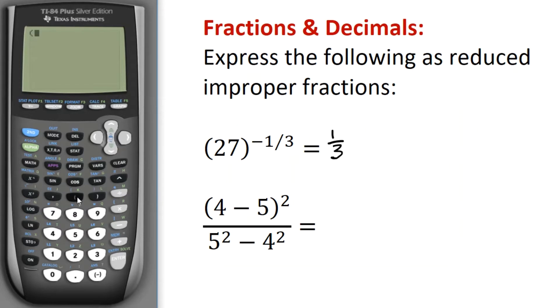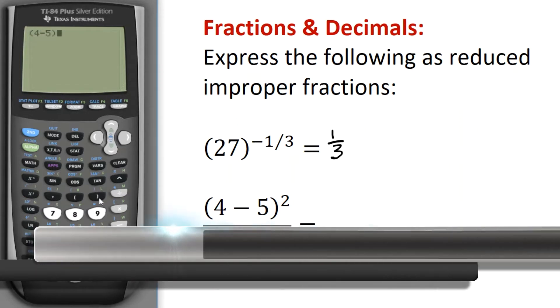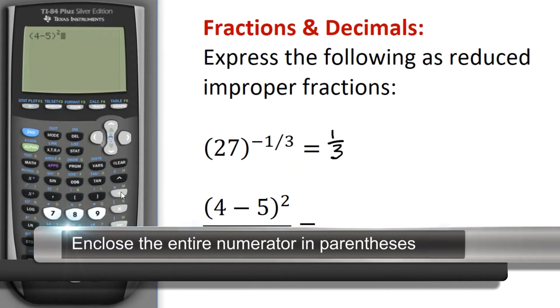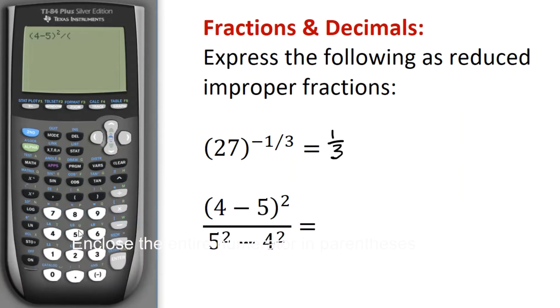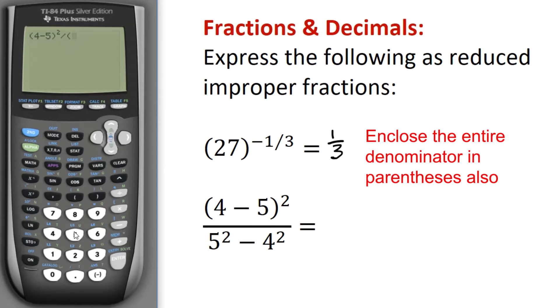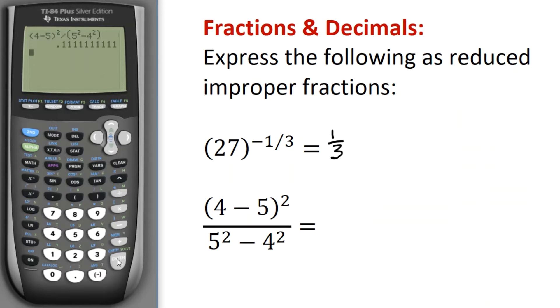So I'm going to use the parentheses key, 4 minus 5, close the parentheses, squared, and now I'm going to use divide. Now, I've got to have everything in the numerator enclosed in parentheses, otherwise it'll use the order of operations and think it's 4 minus 5 squared divided by 5 squared, and that's not what we want. So I have 5 squared minus 4 squared, and I hit Enter.